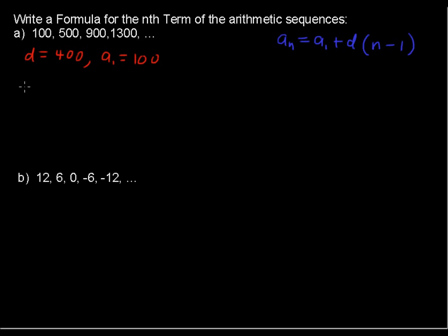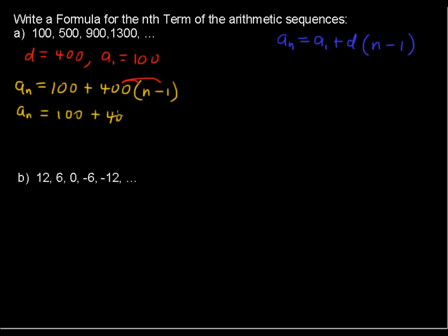Let's take that information and plug it into the general form. A sub n, the nth term, equals 100 plus 400 times n minus 1. Distributing the 400 gives us a sub n equals 100 plus 400n minus 400, which simplifies to a sub n equals 400n minus 300.